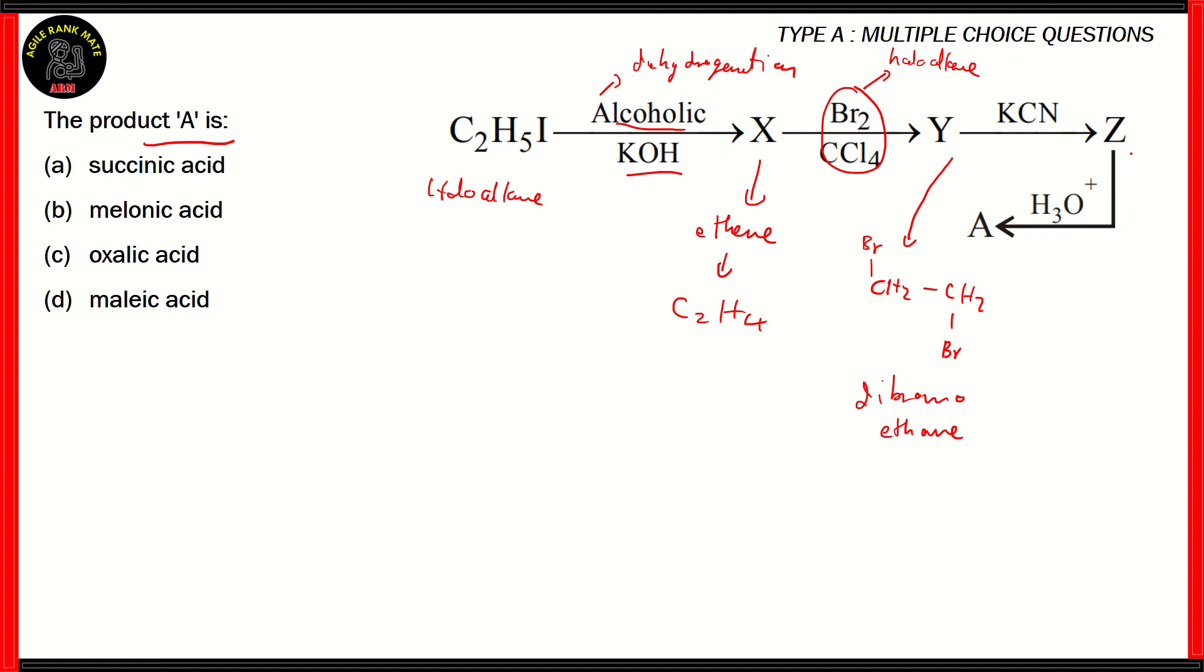So dibromoethane is Y. Now, dihalo-alkane when reacting with potassium cyanide would form the cyanide of that particular organic compound. So the product Z would turn out to be CH2CH2 CN CN and finally when the cyanide of an organic compound is put in an acidic medium then it forms a carboxylic acid. So what we get in the end is COOHCH2CH2COOH which basically is an ethane molecule with two carboxylic groups.